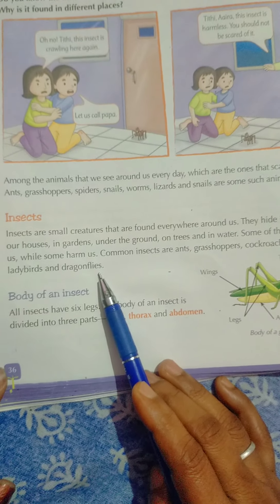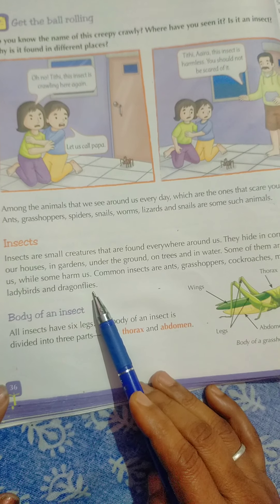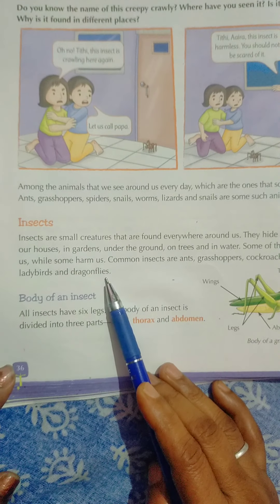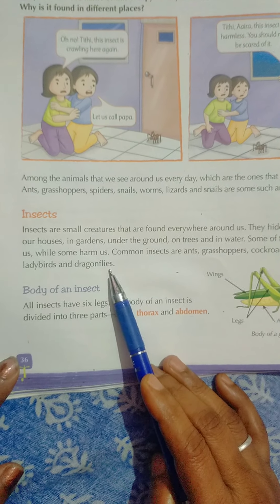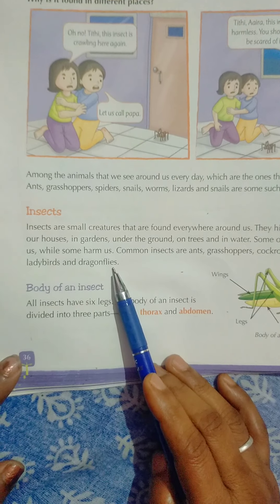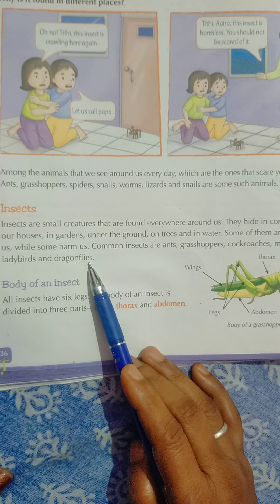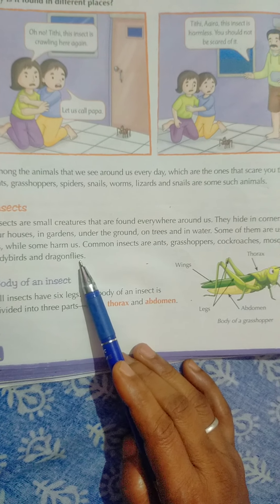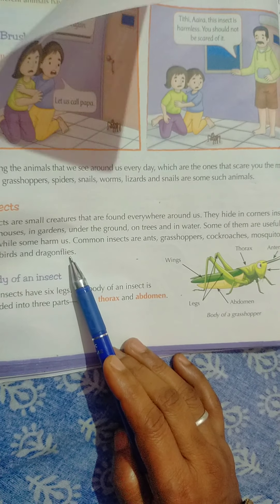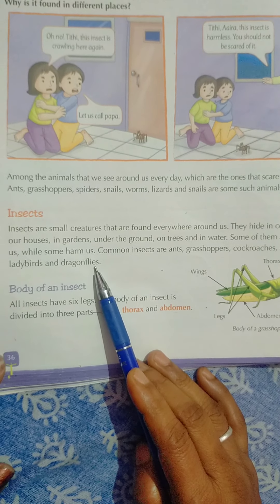उसमें से कुछ हमारे उपकारी हैं, और कुछ हमें चोट पहुँचाते हैं। जिसमें से common insects: चीटी, grasshopper, तेलचट्टा, मच्छर, ड्रैगनफ्लाई, आदि।